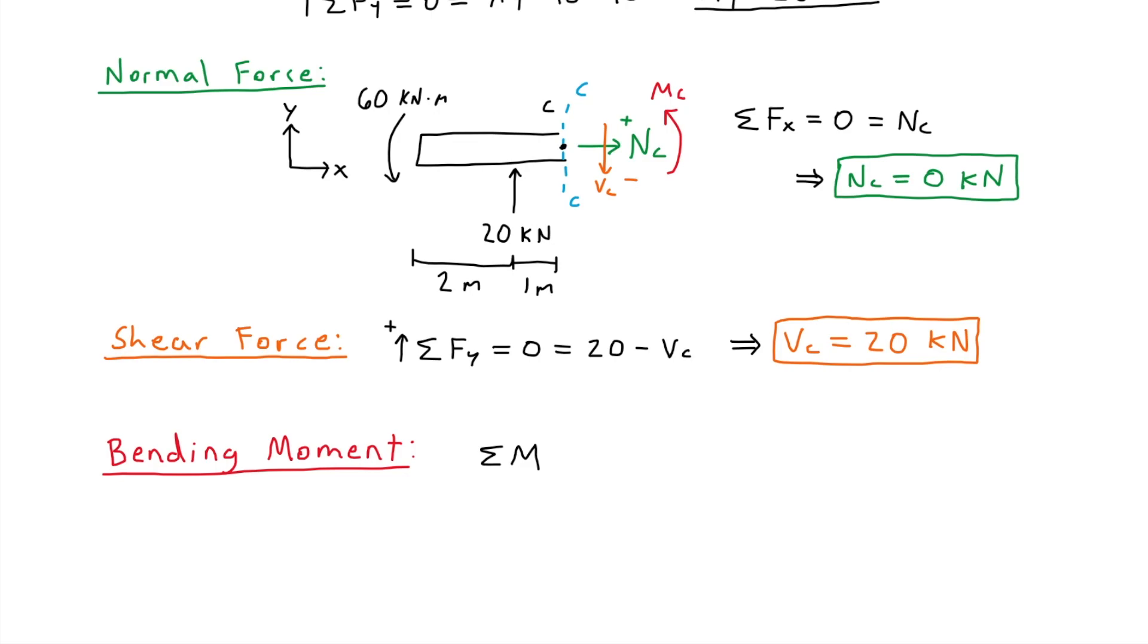We can write the sum of moments about point C with counterclockwise as positive. This is around the Z-axis. Setting this equal to 0, we have the 60 kilonewton meter moment on the left, which is positive, since we are considering counterclockwise as positive.